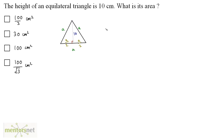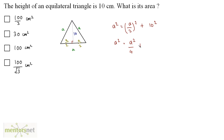The hypotenuse squared, that's A², is equal to base squared plus height squared. So A² = (A/2)² + height². That gives A² = A²/4 + 100. Multiplying through: 4A² = A² + 400.